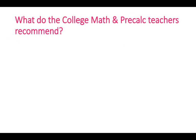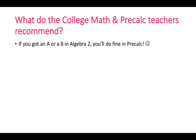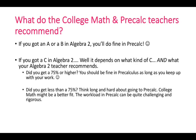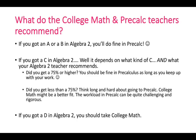So what do the College Math and Precalc teachers recommend? If you're getting an A or a B in Algebra 2, you'll do fine in Precalc — Precalc should be the next class for you. If you got a C in Algebra 2, it depends on what kind of C you got as well as what your Algebra 2 teacher recommends. If you get a 75% or higher, you should theoretically be fine in Precalculus as long as you keep up with your work — you can't be lazy, you can't slack off, you've got to stay on top of your homework because practice is very important. If you got less than 75%, you might want to think long and hard about going to Precalculus, because College Math might be a better fit — the workload in Precalc can be quite challenging and rigorous. And if you got a D in Algebra 2, Precalc is not for you — you should take College Math.